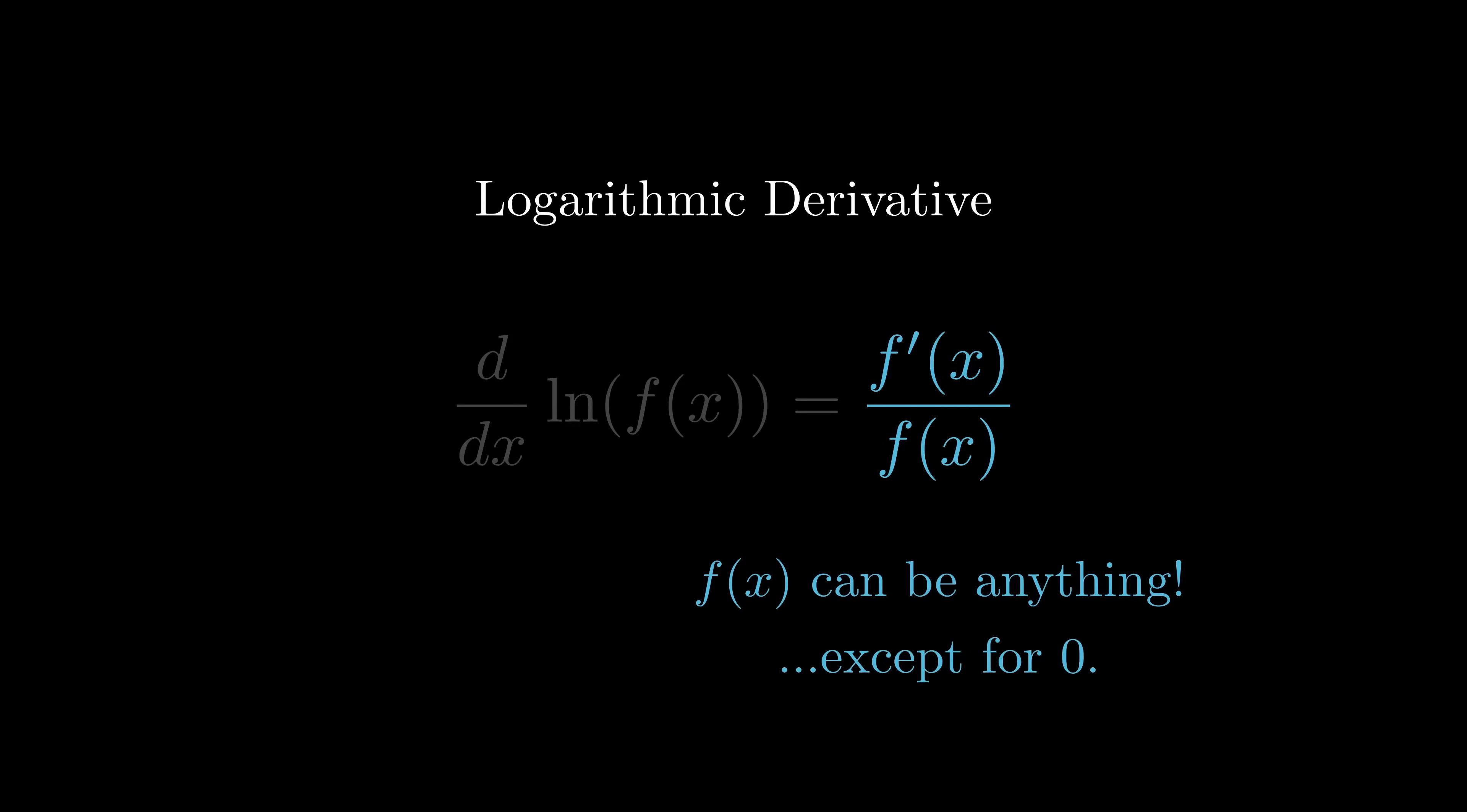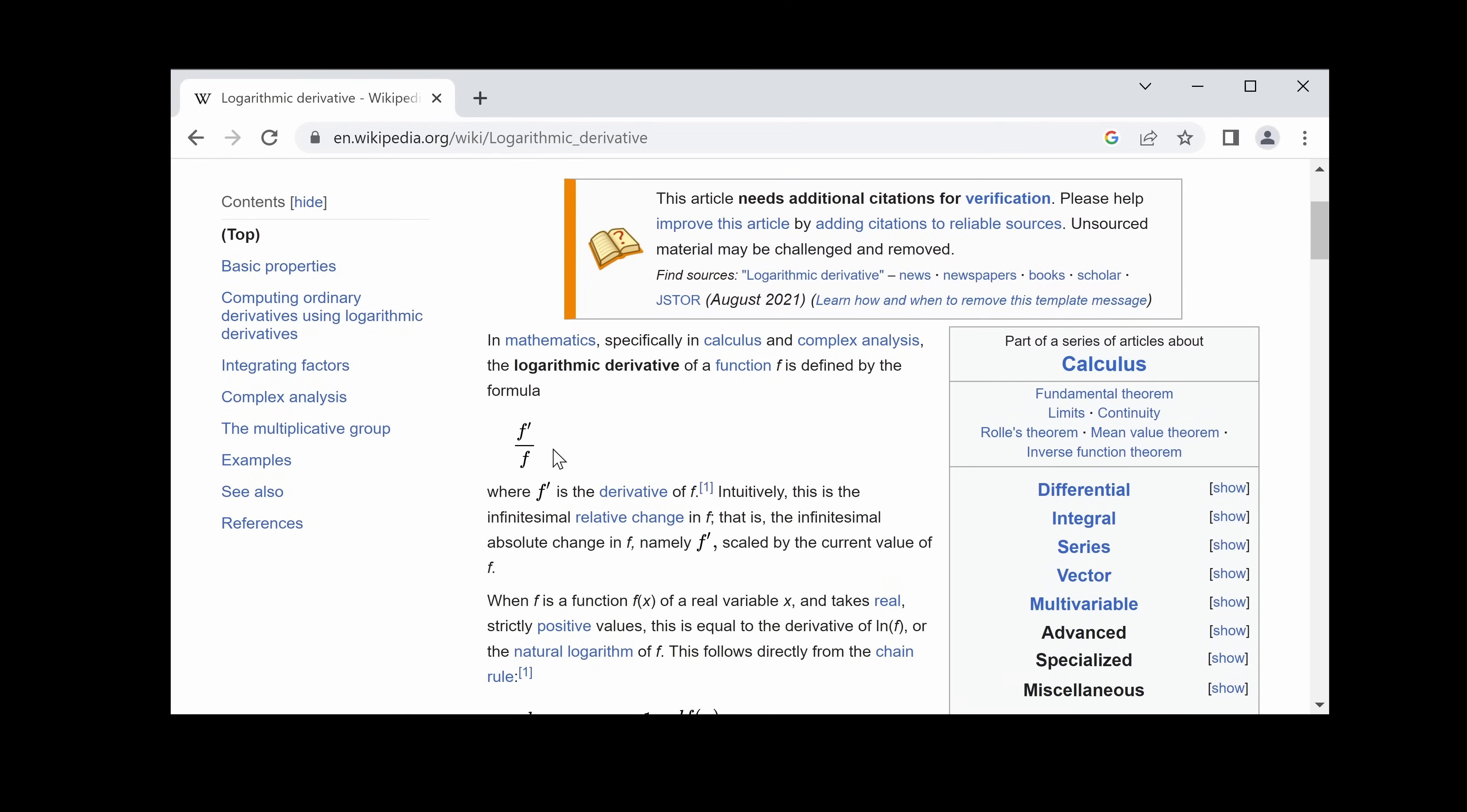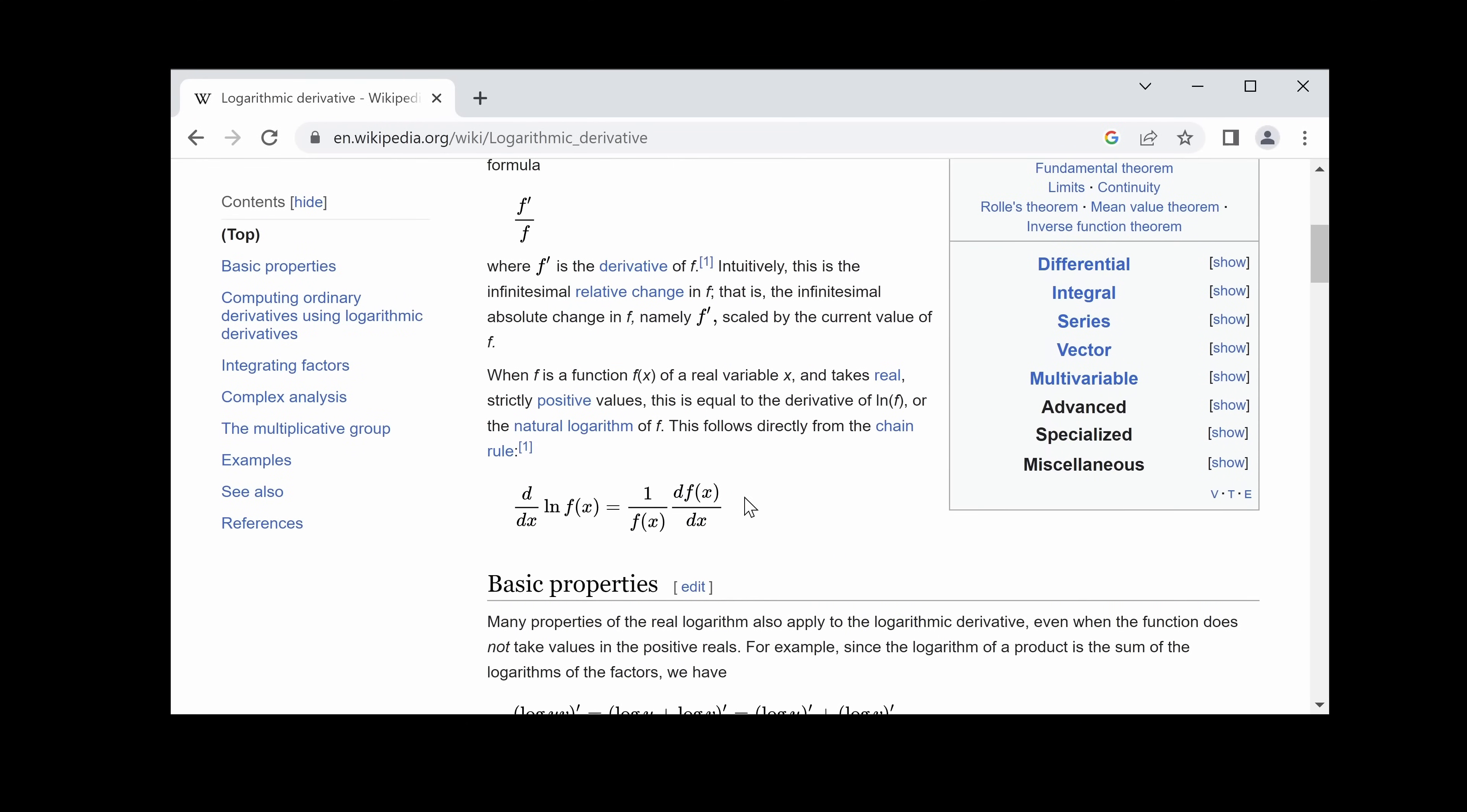The derivative of the logarithm of a function has a name. It's called the logarithmic derivative. As we saw from the chain rule, it's equal to f prime over f. But where the original form requires the function to be positive, f prime over f works for any differentiable function, except where it equals zero. Because of this, f prime over f is actually the true definition of the logarithmic derivative, and it's the first thing you'll see if you look it up. The definition as the derivative of the logarithm is merely a convenient special case for when the function takes on only positive real numbers.